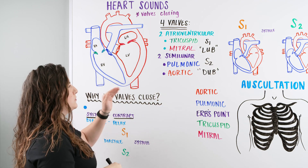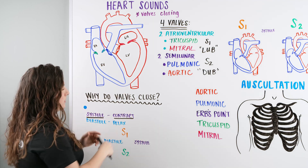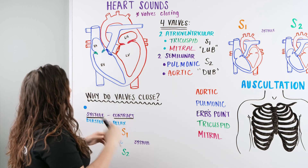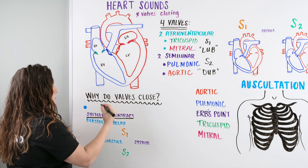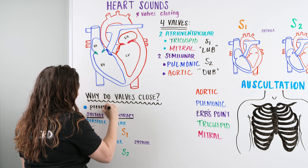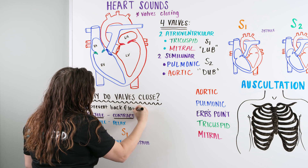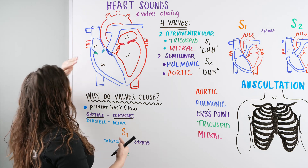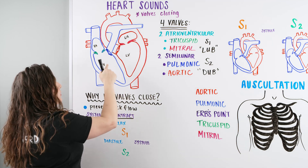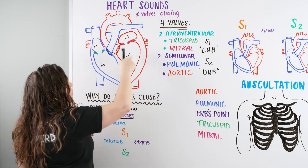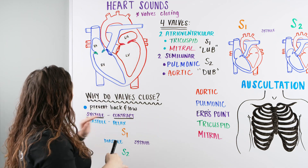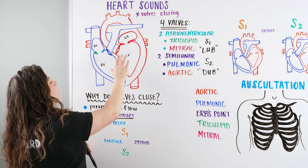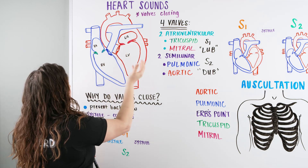The valves make the sound when they are closing. So why do valves close? The purpose of them closing is to prevent backflow. Within the heart, we want blood flowing from the right atria to the right ventricle and out, and from the left atria through the left ventricle and out — not having any backflow. We don't want unoxygenated blood and oxygenated blood mixing, or any issues with insufficiency giving us problems with our cardiac output.